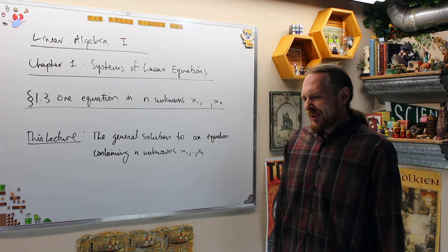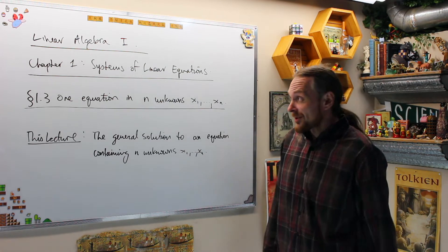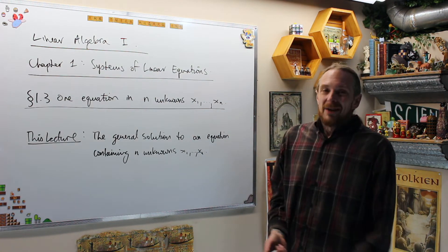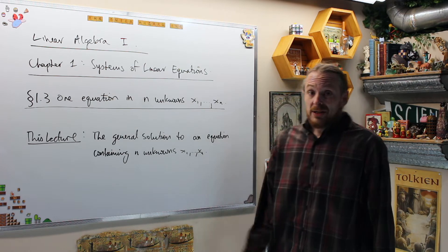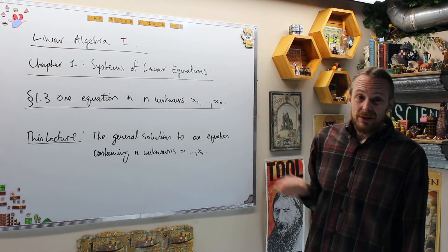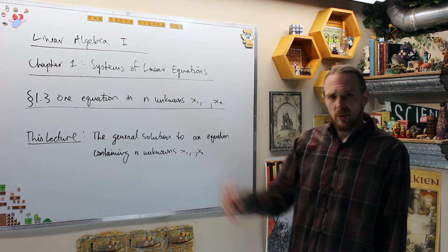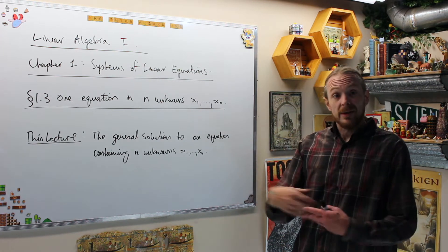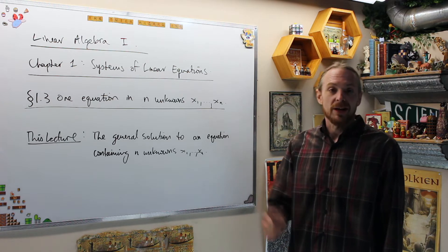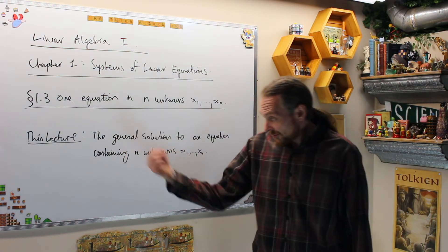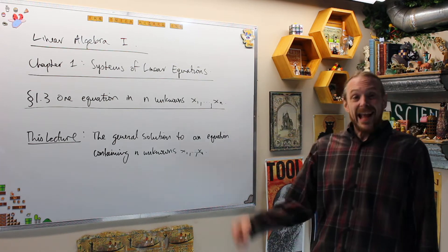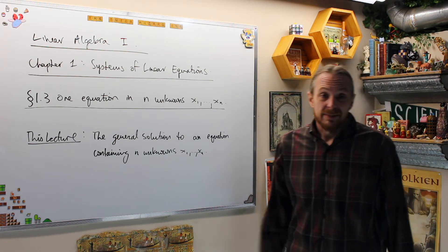We talk at first about nonlinear equations, but those are the fun ones. Right now what we're going to do is step it up one level from last time — we did one equation in one unknown. Section 1.3 is now going to be one equation in as many unknowns as you want. This lecture specifically covers the general solution to equations containing n unknowns instead of just one.